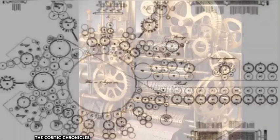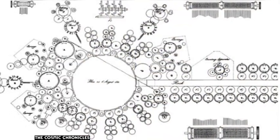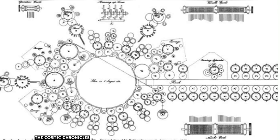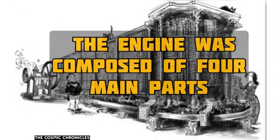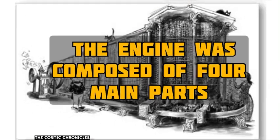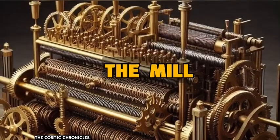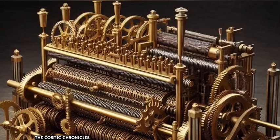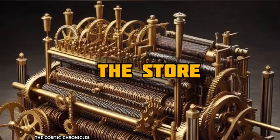It was to be controlled by punched cards, which contained the computational instructions. The engine was composed of four main parts: the mill, which functioned as the central processing unit, or CPU.